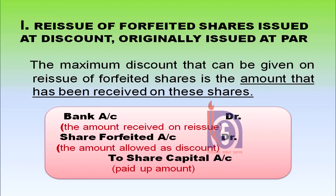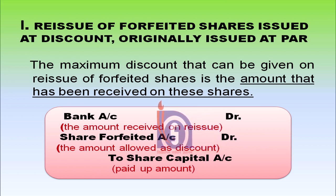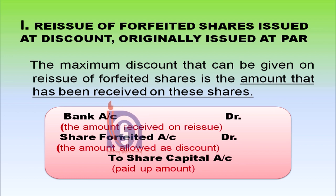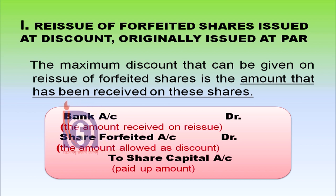Our first situation is reissue of forfeited shares issued at discount, but they were originally issued at par. The maximum discount that can be given on reissue of forfeited shares is the amount that has been received on these shares. For example, if a share for rupees 100 is issued and on that only rupees 25 has been given by the shareholder, that can be the amount of discount which the company can allow at the time of reissuance. The accounting entry for this would be: bank account debited, share forfeited account debited, to share capital account.